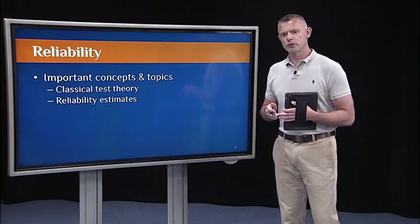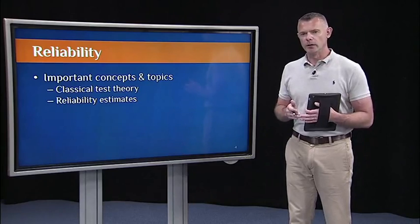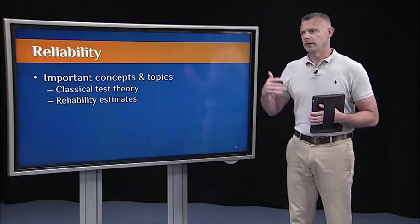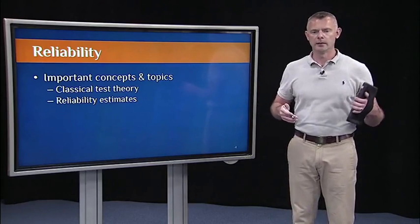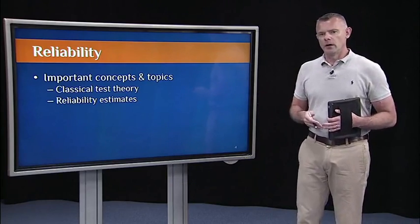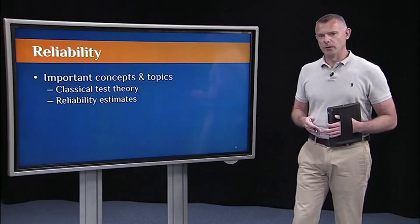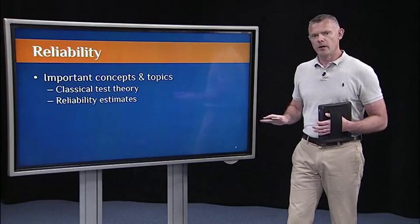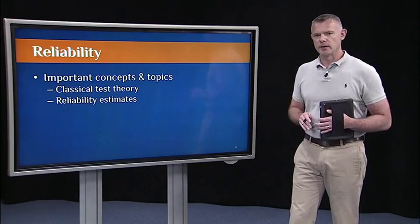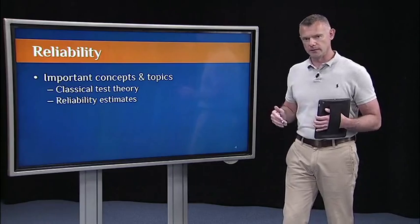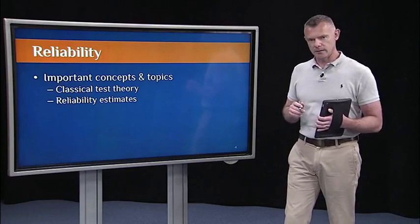It's a little bit harder to evaluate reliability when you're dealing with things like intelligence or personality or attitudes. Weight and mass, those things are easier to assess reliability. So how do we do it with these fuzzier constructs that are common in the social sciences? Well, that's where classical test theory comes in.